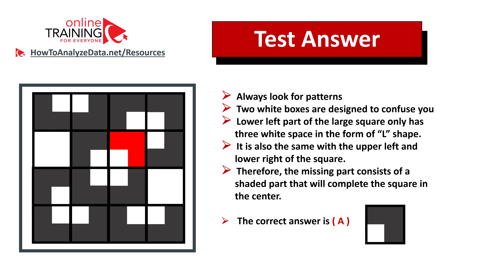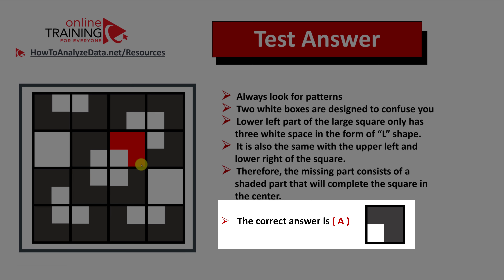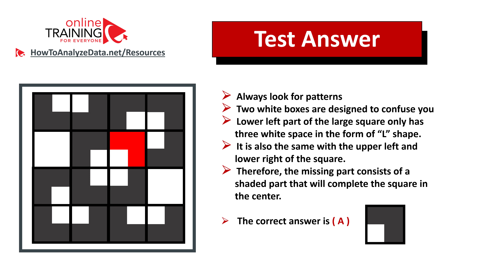Did you figure out the answer? Let's continue. As usual, look for patterns. If you look closely, you'll see that the middle box right in the center of the larger square is symmetrical. The L-shape at the bottom and the shape in the upper right corner represent symmetry for this middle square, which consists of four small squares. The lower left part of the larger square has only three white spaces in the form of an L-shape. The missing part consists of the shaded section which completes the central square. The correct answer is choice A.